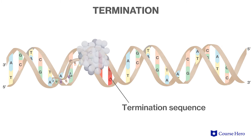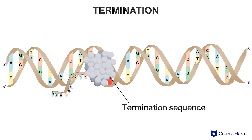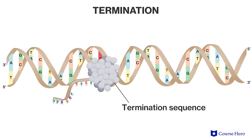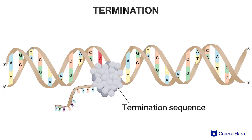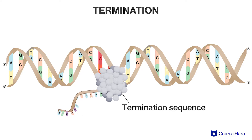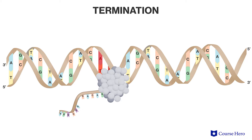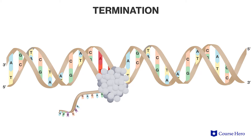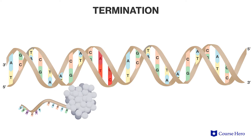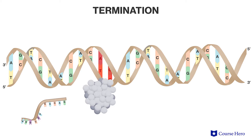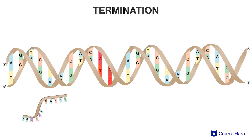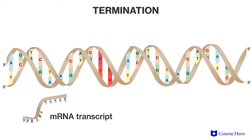The end of transcription is called termination. Here, a specific sequence called a terminator signals the end of transcription. In prokaryotes, this results in RNA polymerase detaching itself from the DNA and the release of the transcript, which is then ready to use as mRNA.